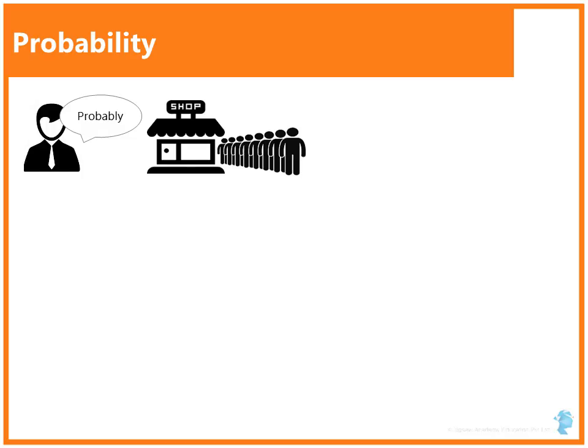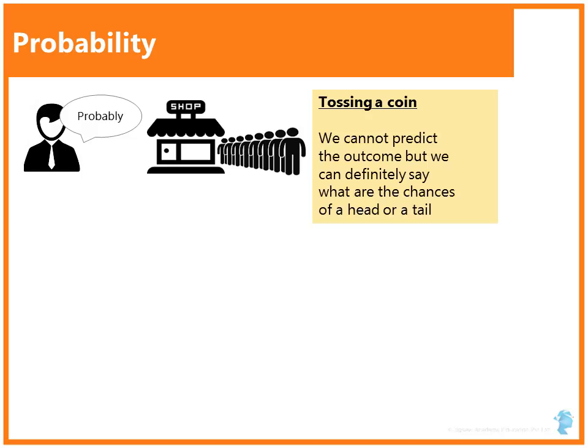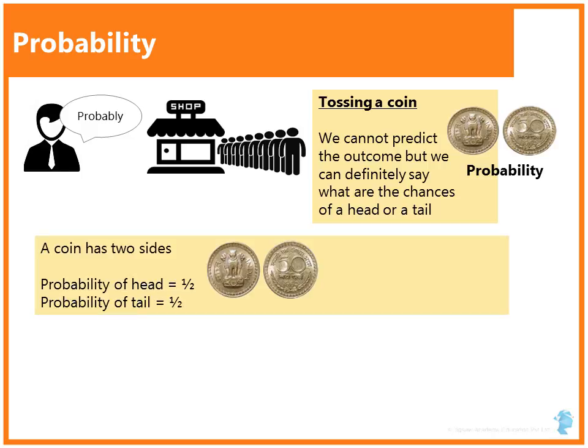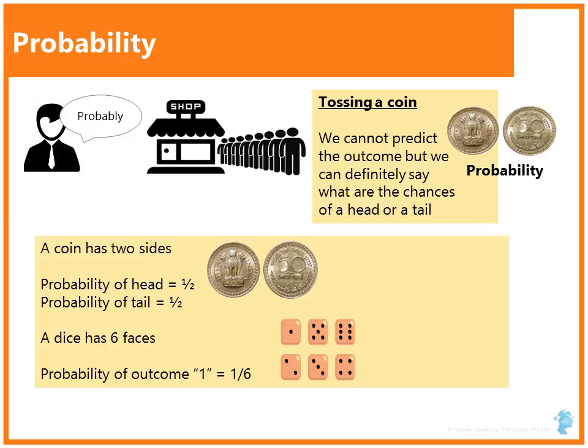For example, we cannot predict how many customers would come to a particular shop on a particular day. Or, for example, we cannot predict what will be the outcome when we toss a coin. But we can definitely say what are the chances of a head or a tail. We call this chance as probability. For example, probability of head when coin is tossed is half, which is the same for tail.